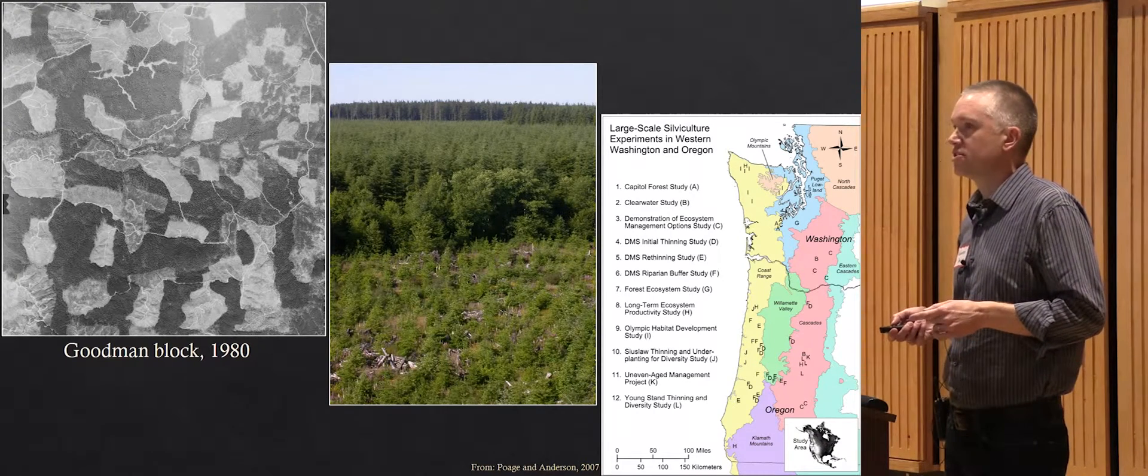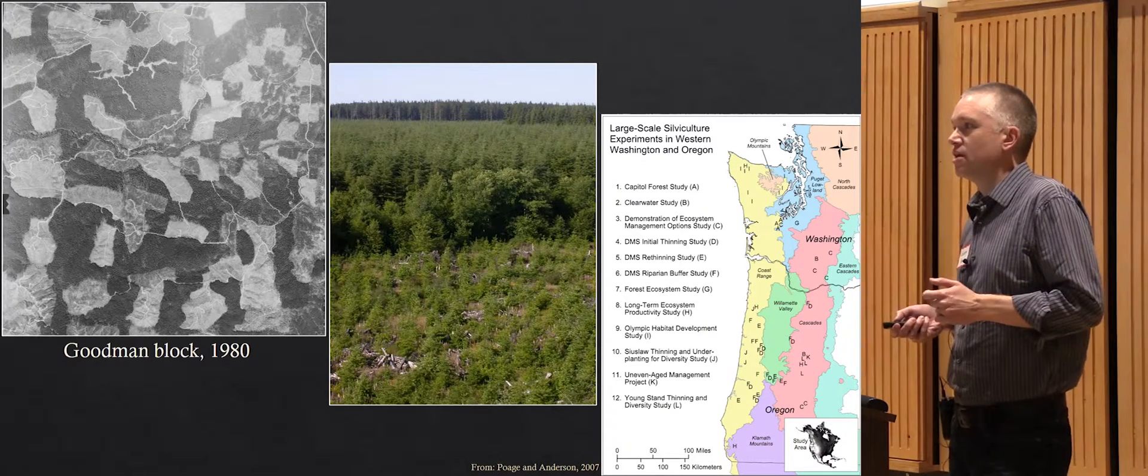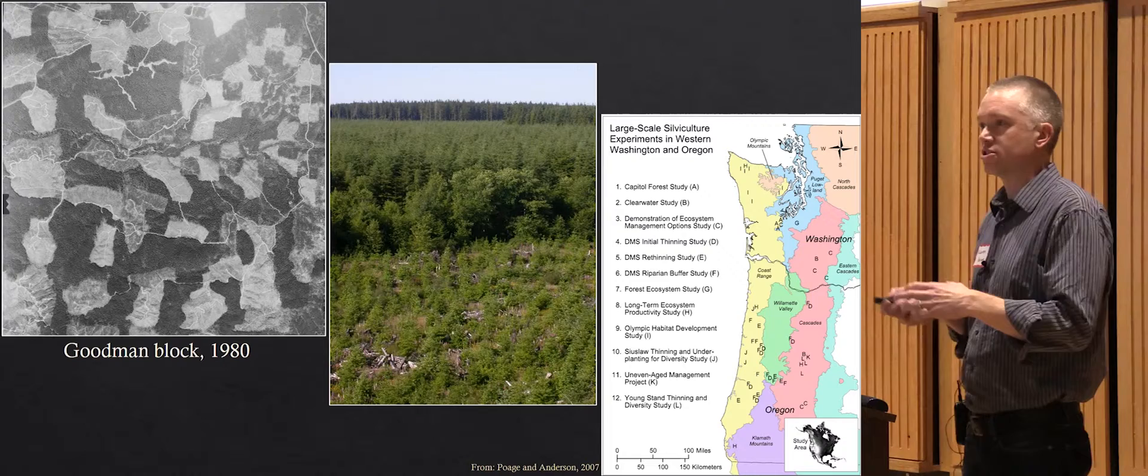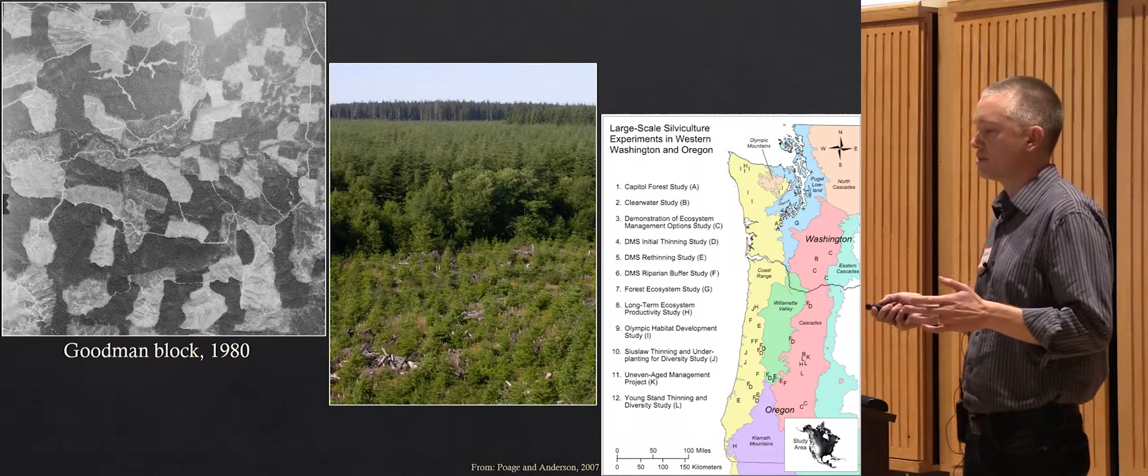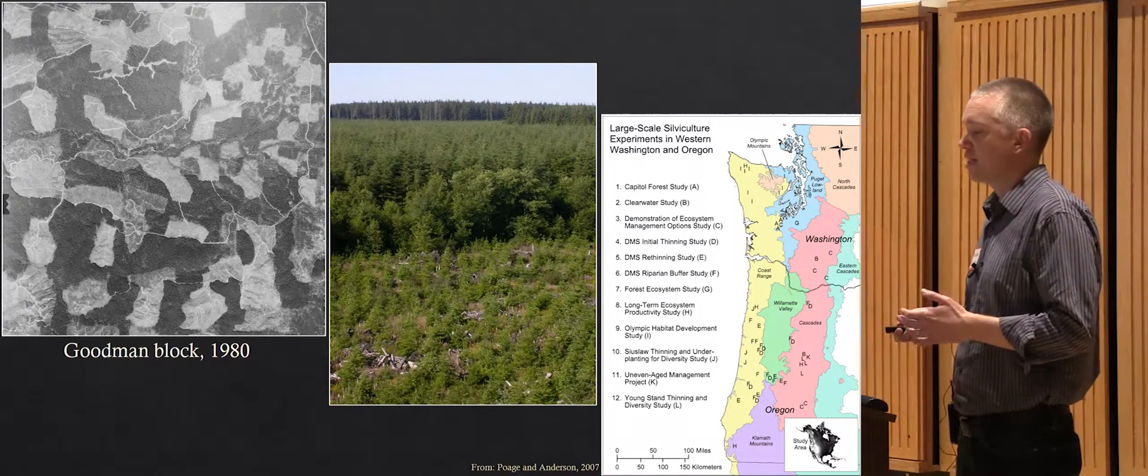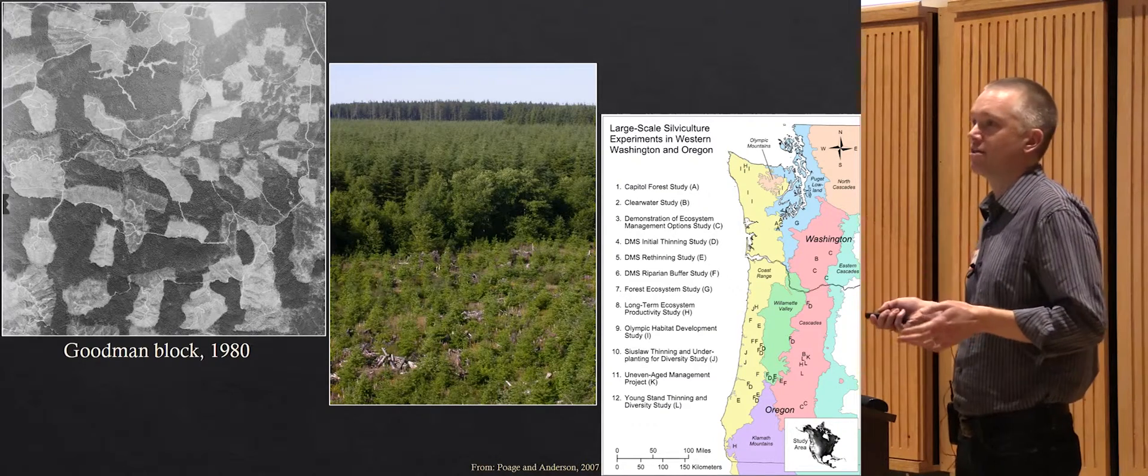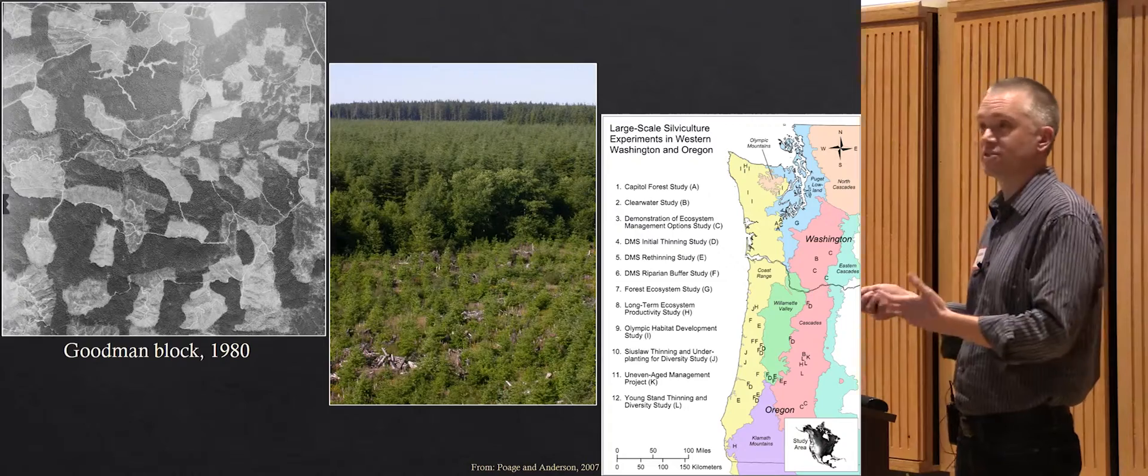Also in that era, there were a number of studies looking at alternative harvest practices instead of just large regeneration harvests, looking at creating gaps and using commercial thinning to diversify forest structure and create different types of habitat.